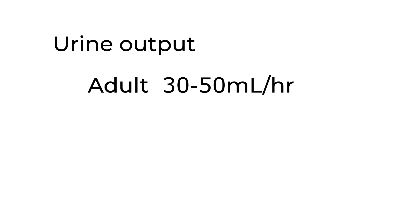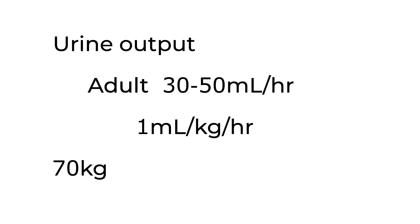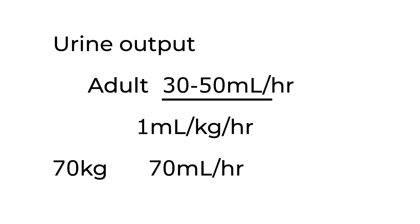If you want to use a formula, you can use 1 mL per kg per hour. So for a 70 kg man, he should produce about 70 mLs per hour of urine — though even 30 to 50 would be sufficient. If output is less than this, it means he's not getting enough fluid and you need to increase the fluid rate.